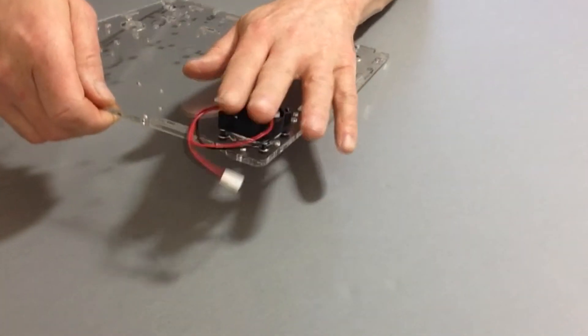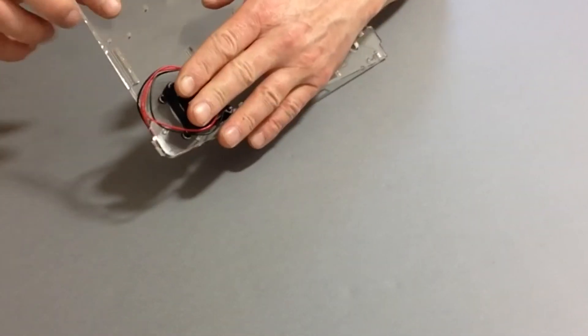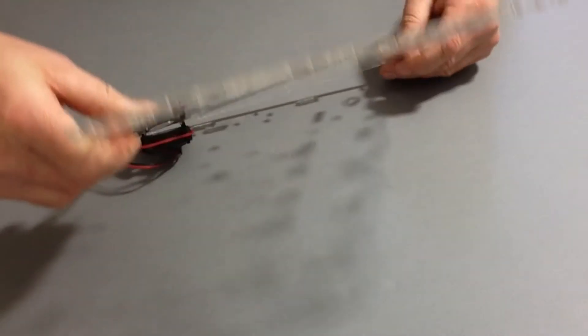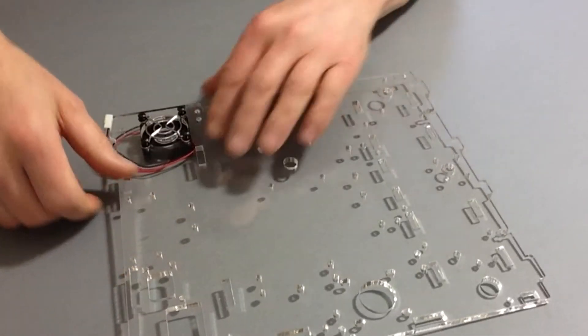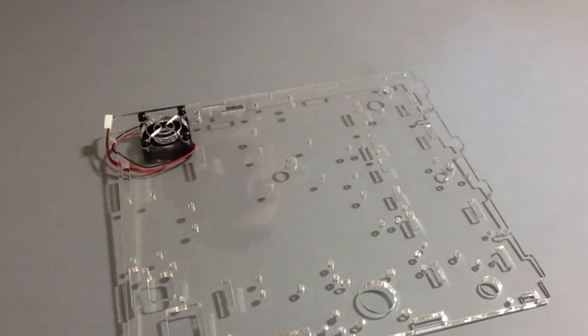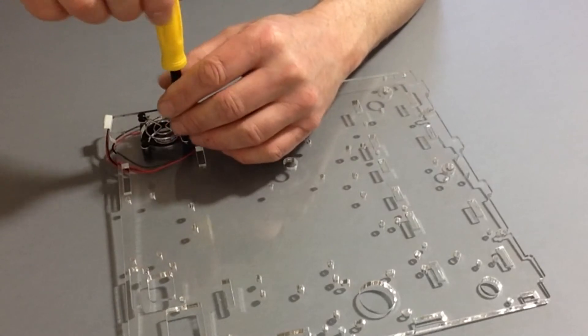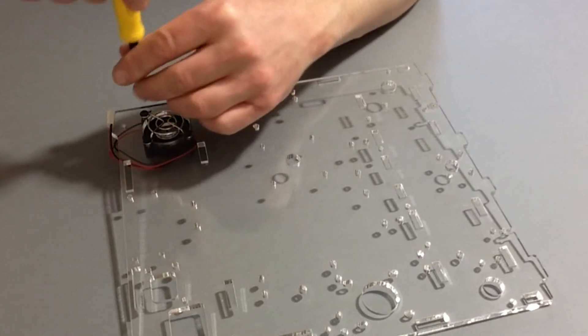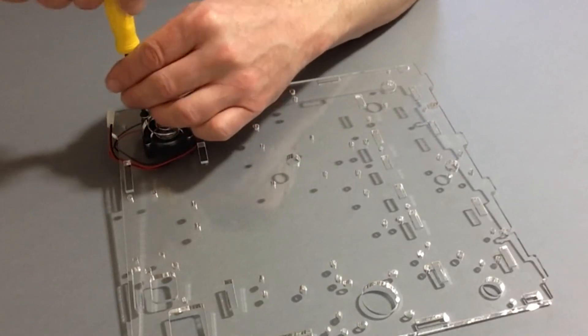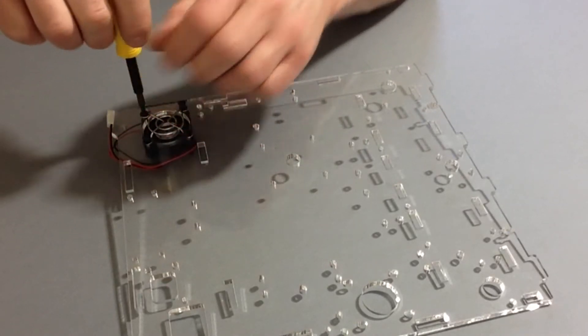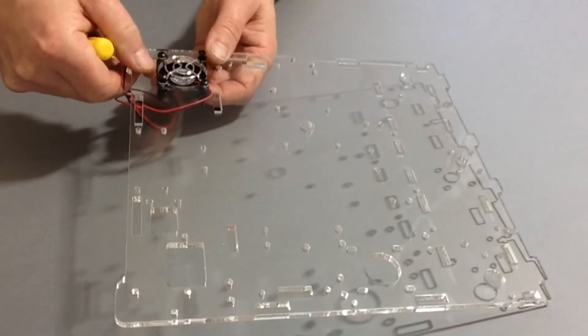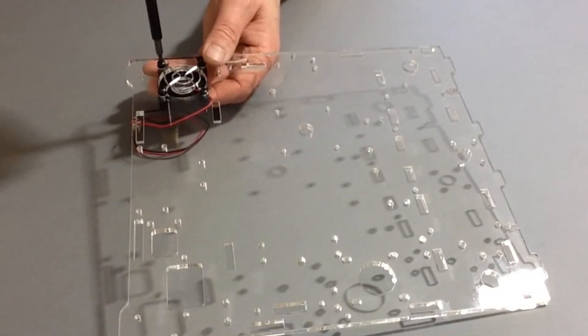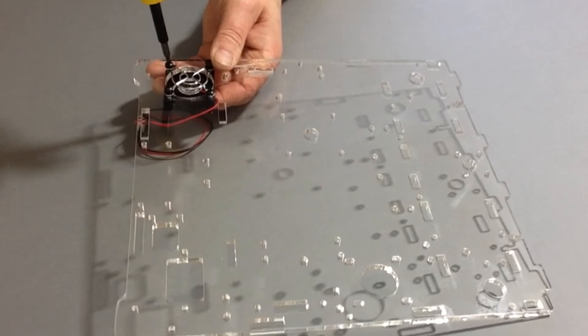Turn it back over, get your screwdriver, and gently tighten those four thrust screws, making sure you're alternating from one corner to the other.